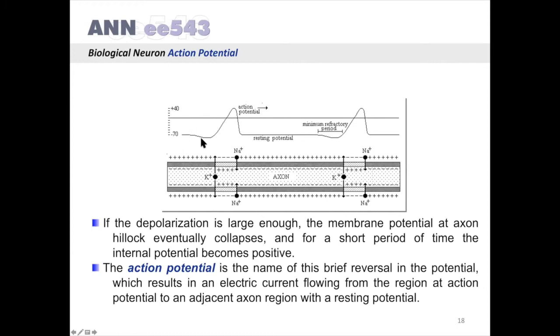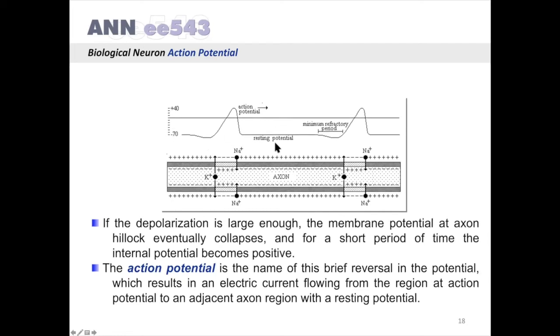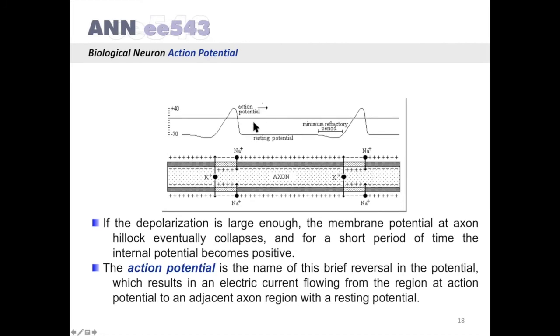In this figure, we are considering transmission of action potential on an axon from left to right. This is the resting potential. If the depolarization is large enough, the membrane potential at axon hillock eventually collapses, and for a short time period, the internal potential becomes positive. The action potential is the name of this brief reversal in the potential.